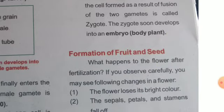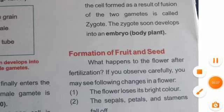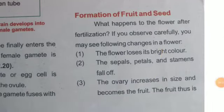So the plant grows from two male gametes to the zygote, and the zygote then develops into an embryo. Now talking about the formation of fruit and seed — what happens to the flower after fertilization? After fertilization, the zygote becomes an embryo. If you carefully observe, you can see changes in the flower: the flower first loses its brightness, the color and shine of the flower fades.